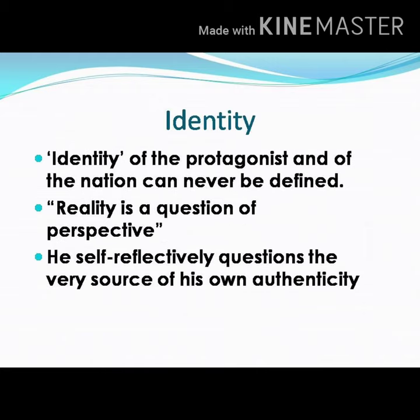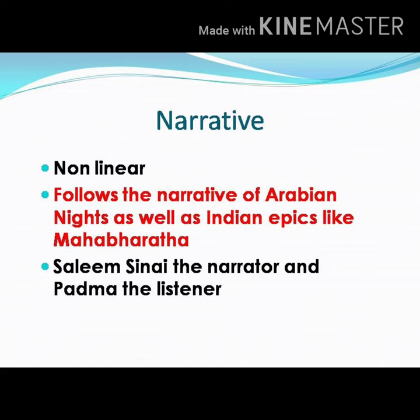Identity of the characters and the nation is a key concern in the novel, and identity can never be defined. Salim himself claims that reality is a question of perspective and he self-reflectively questions the very source of his own authenticity. One of the striking features of the novel is its narrative. It has a non-linear narrative. It follows the narrative of the Arabian Nights as well as Indian epics like the Mahabharata, where it follows an episodic character.